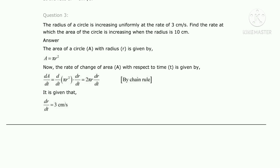Area A equals pi r squared. Differentiating with respect to time: dA/dt equals d/dt of pi r squared. Pi is constant, so dA/dt equals pi times 2r times dr/dt, using the chain rule. This gives dA/dt equals 2πr times dr/dt.